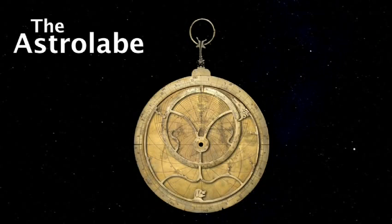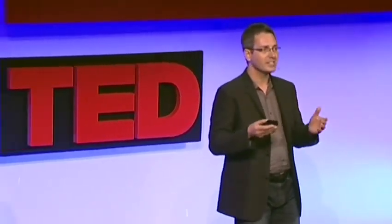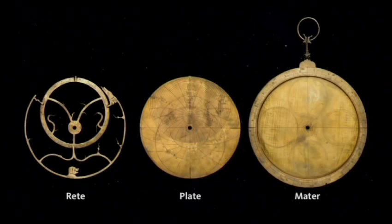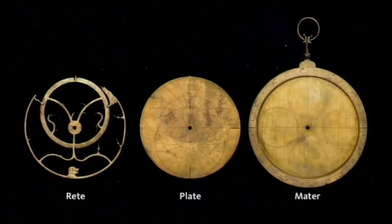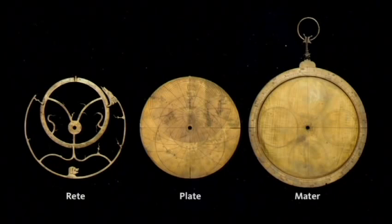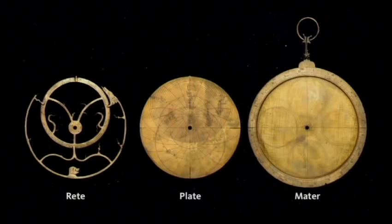It was the world's first popular computer, and it was a device that is, in fact, a model of the sky. The different parts of the astrolabe: the reet corresponds to the position of the stars, the plate corresponds to a coordinate system, and the mater has some scales and puts it all together.